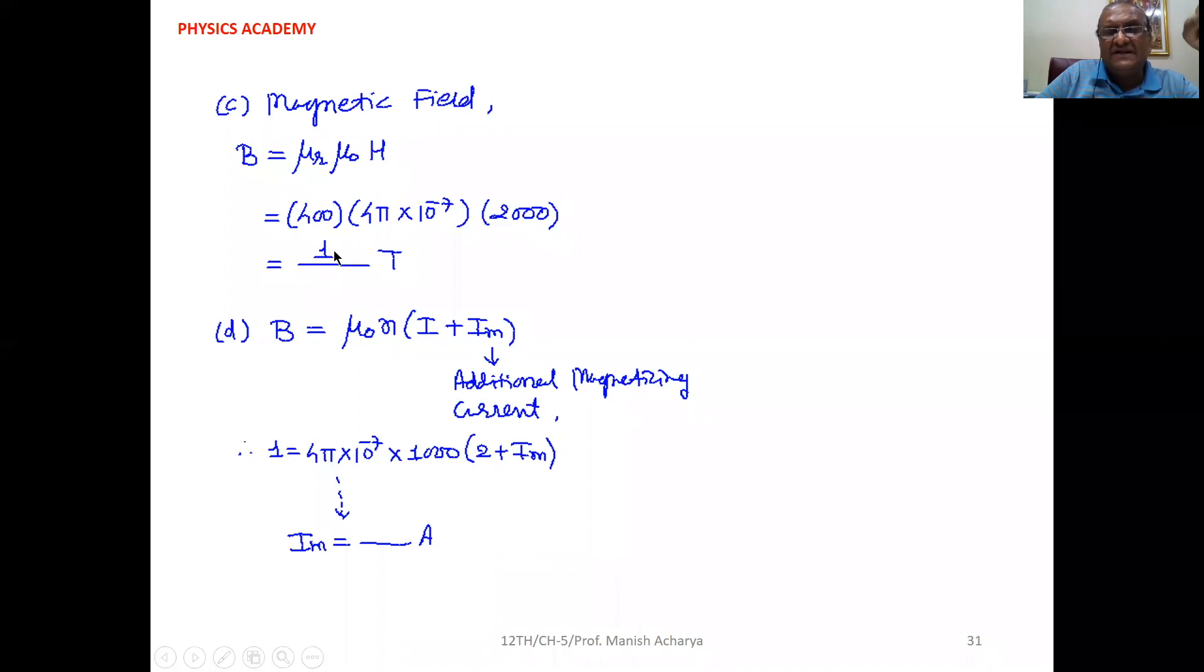Now our equation turns to B equal to μ_0 N (I plus I_M). So B is 1, μ_0 is 4π into 10 raised to minus 7, N is 1000, I is 2, and I_M we have to calculate.